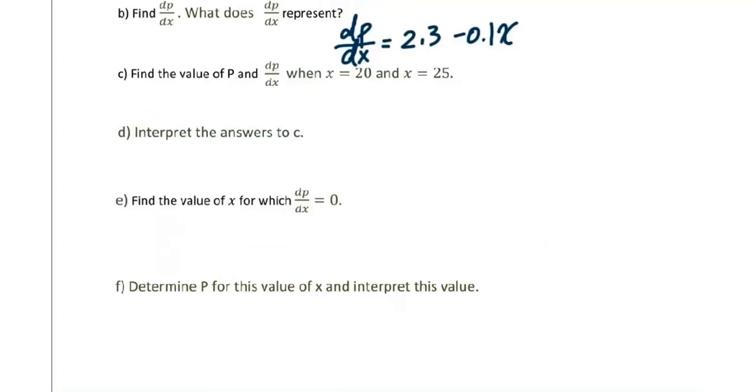Now let's go to part e: Find the value of x for which dP/dx equals 0. So we will set this equal to 0: 2.3 - 0.1x = 0. Add 0.1x both sides, then divide by 0.1 both sides. You will get x equals 23.